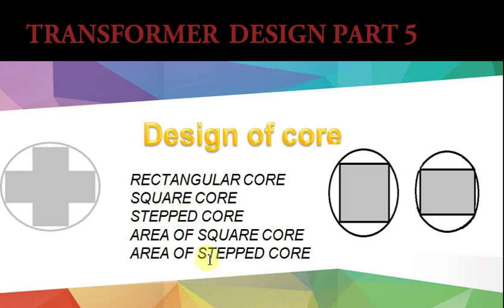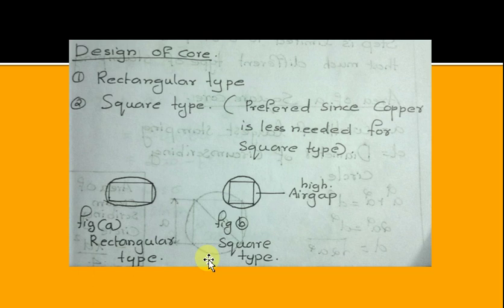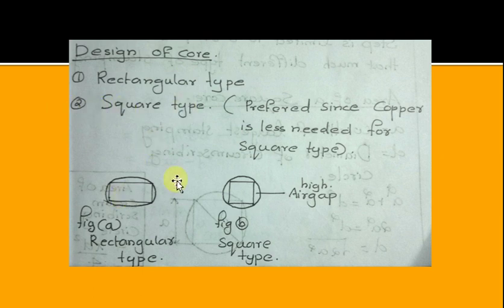Design of Core: two types of cores are there — Rectangular Type and Square Type. Square Type is preferred since less copper is needed for it. Square Core has a higher air gap and less copper area, as shown in the figure, for the same area.